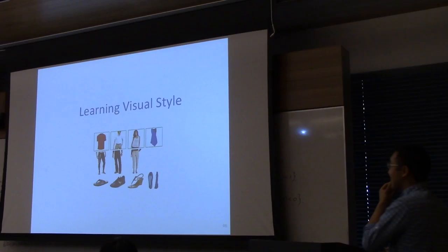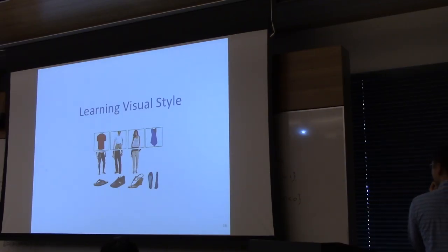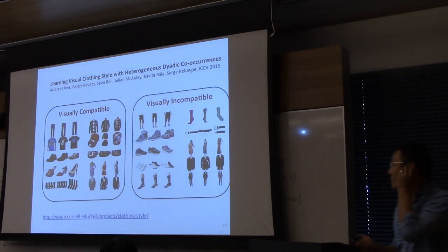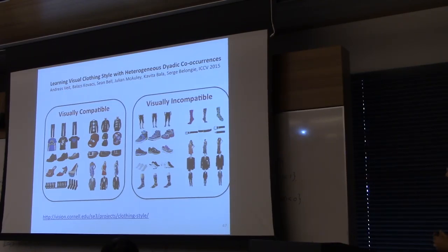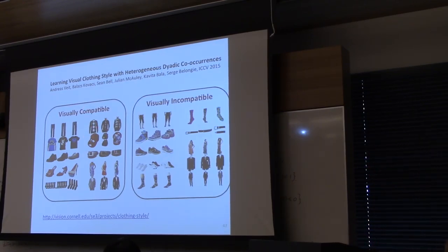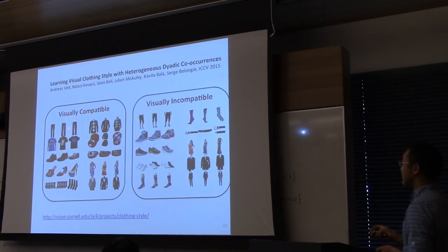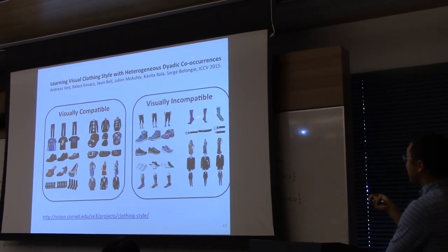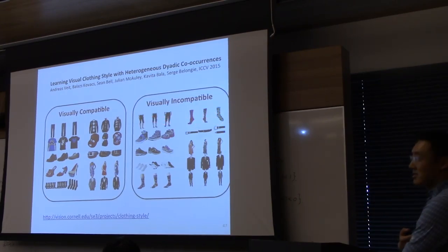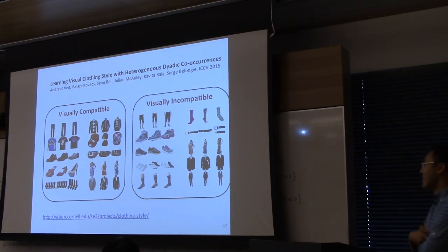The last application — probably the most fun — is learning visual style. Based on the paper appearing at ICCV last year. The basic idea is that based on the image of a clothing item, we want to learn whether or not it is visually compatible with another clothing item in terms of style. The model predicts that certain pants are compatible with certain sweaters, and that certain socks are incompatible with certain pants.